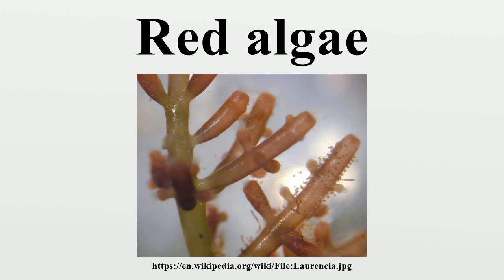Because apical growth is the norm in red algae, most cells have two primary pit connections, one to each adjacent cell. Connections that exist between cells not sharing a common parent cell are labelled secondary pit connections. These connections are formed when an unequal cell division produces a nucleated daughter cell that then fuses to an adjacent cell.